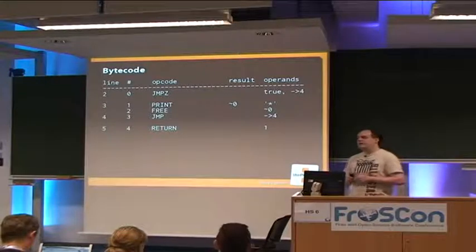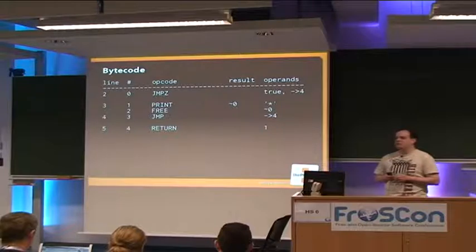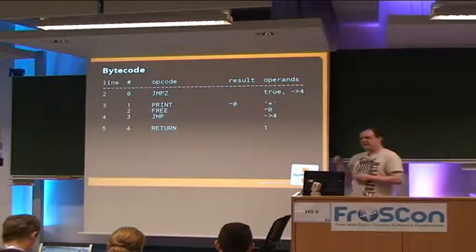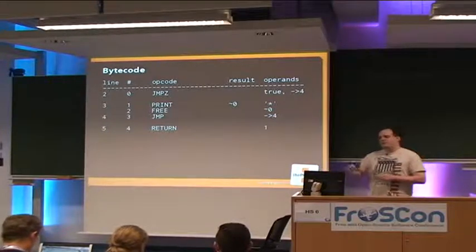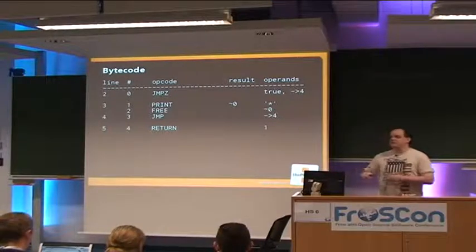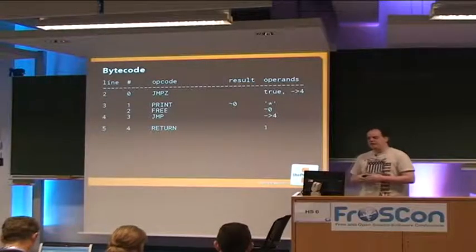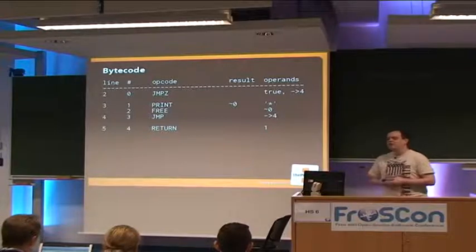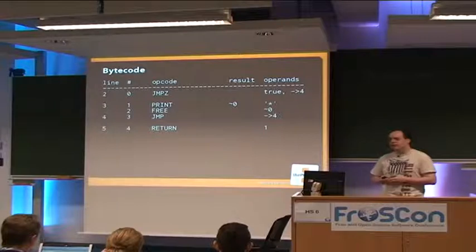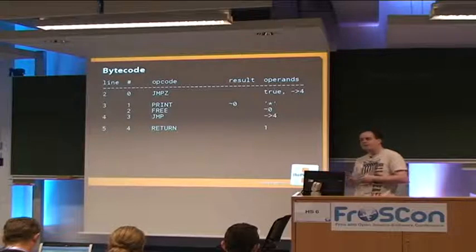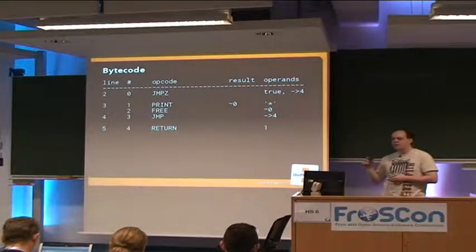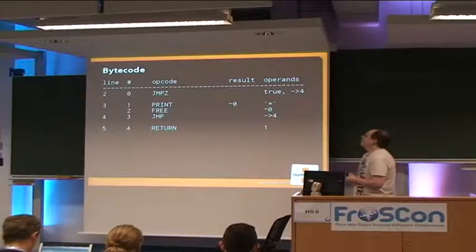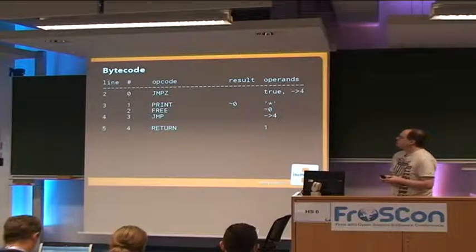If you've ever done assembly language or looked at the JVM, the Java Virtual Machine, this should look familiar. Every function that you write — including functions that you don't write, meaning plain PHP statements in a file — is also considered a function. Every function is compiled by the PHP interpreter into a so-called op array. An op array consists of multiple op lines. Each op line, in turn, consists of one op code. An op code can have a result and operands that it operates on. This very simple PHP code is compiled down into five op codes.